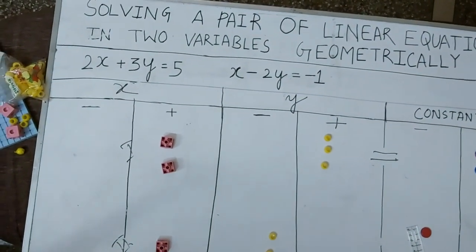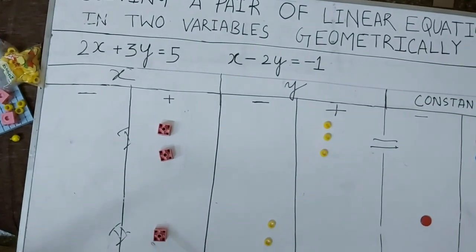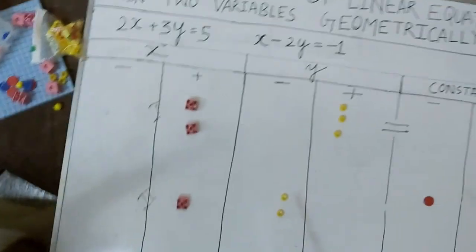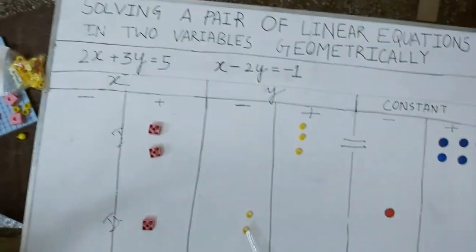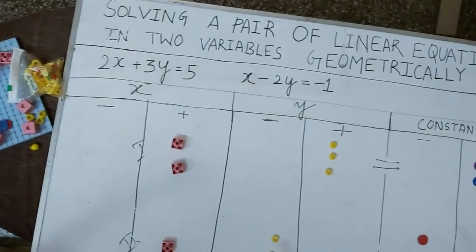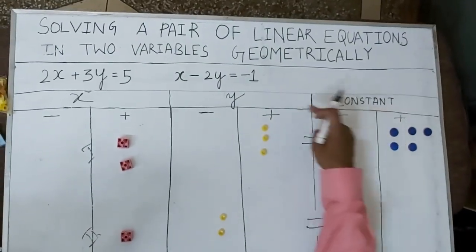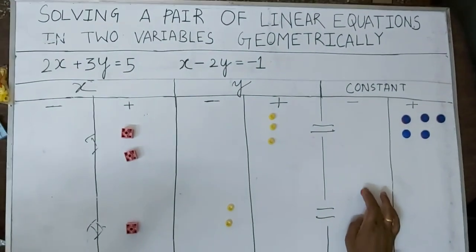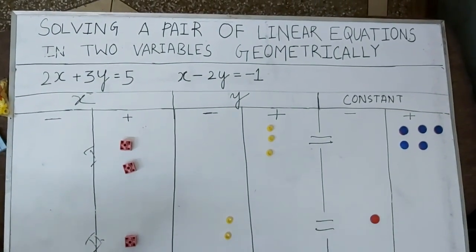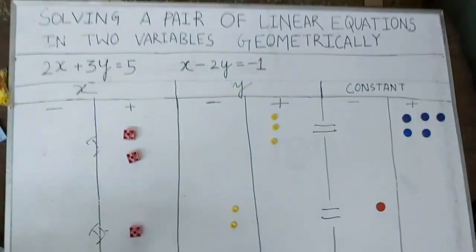Now for the second equation, x minus 2y equals minus 1. Each x is one cube. For minus 2y, on the negative side I put two yellow beads. It is equal to minus 1, so I have placed one red coin on the minus side. I have now arranged both equations.